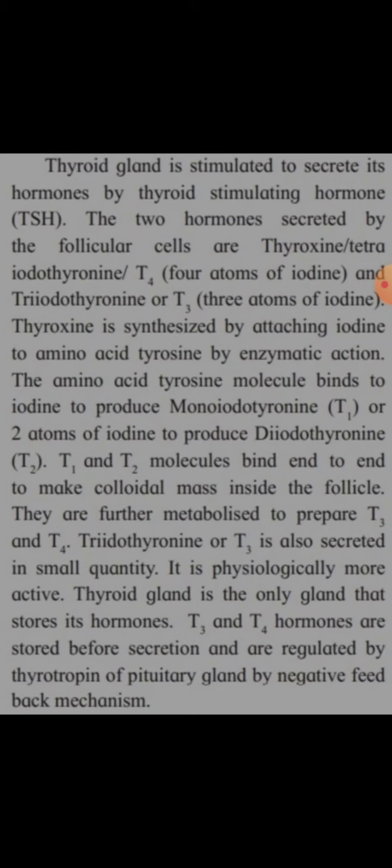Thyroxine is synthesized by attaching iodine to the amino acid tyrosine by enzymatic action. The tyrosine molecule binds to iodine to produce monoiodothyronine (T1), or two atoms of iodine to produce diiodothyronine (T2). T1 and T2 molecules bind end to end to form colloid inside the follicle and are further metabolized to prepare T3 and T4. Triiodothyronine (T3) is secreted in small quantity but is physiologically more active.